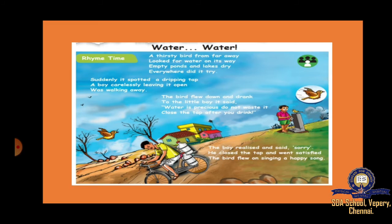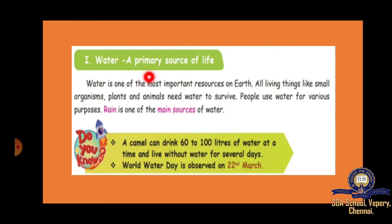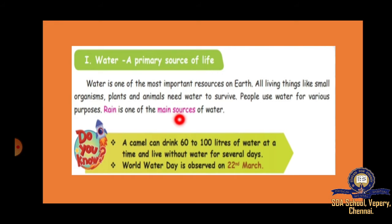Now we will see what water is mainly. Water is a primary source of life. We all need water. Water is one of the most important resources on earth. All living things — small organisms, plants, animals — everything needs water to survive. People use water for various purposes. Rain is one of the main sources of water. We drink water, our body consists of water, we need to drink water every day. Even for cooking, washing, cleaning, brushing, and bathing, we need water. Plants and animals also want water to survive.